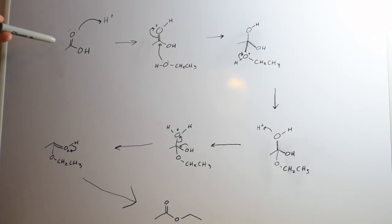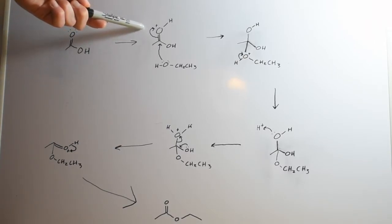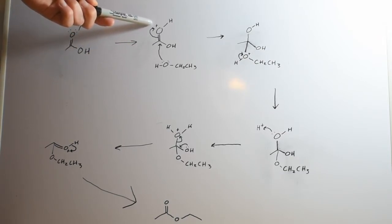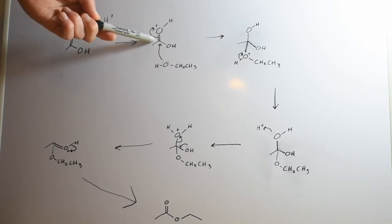The first thing that happens is that the oxygen of this carbonyl gets protonated. This proton comes from solution and it can come from a strong acid catalyst such as sulfuric or phosphoric acid or the hydronium ion which is present in acidic aqueous solutions. Once this oxygen has been protonated, the electrons from this double bond go to the oxygen which makes a positive charge on the carbonyl.